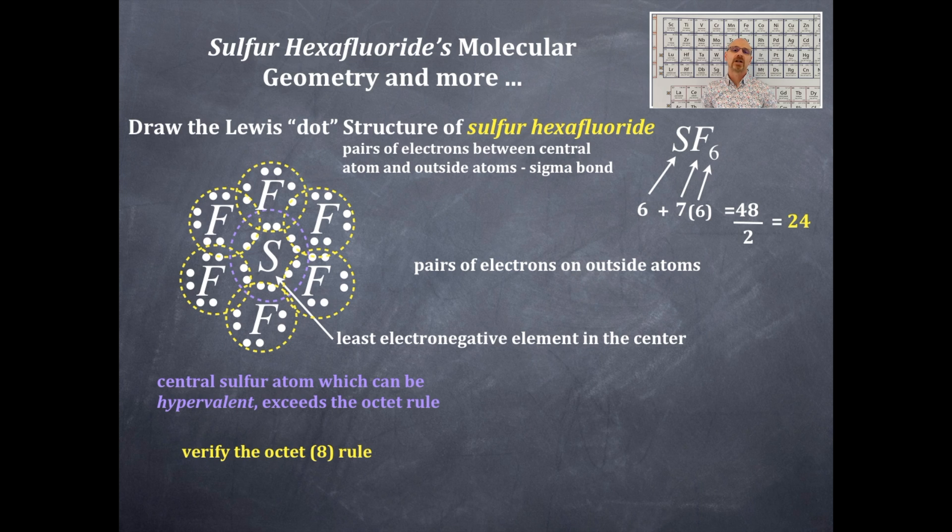Now that sulfur in the middle I already mentioned it previously but it is period three, period three or greater period three, four, five, six, or seven can exceed the octet rule and be hypervalent and sulfur is an example of that.